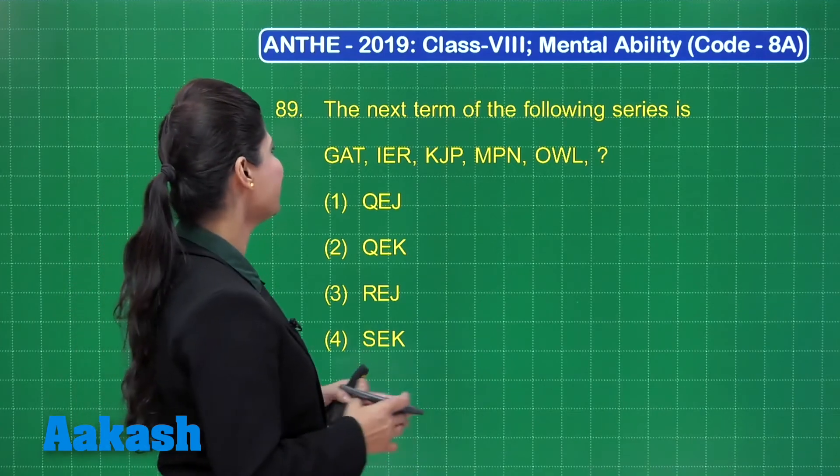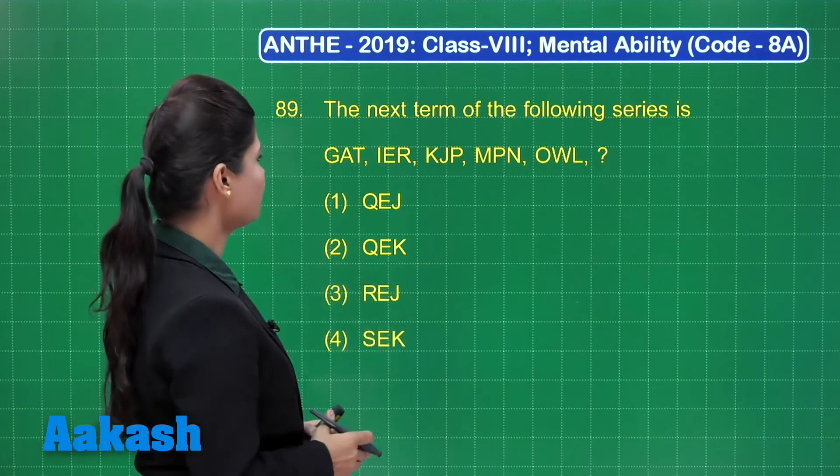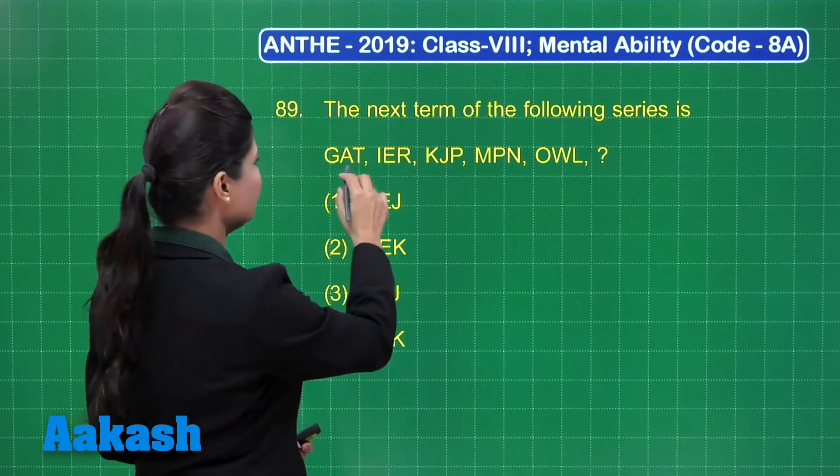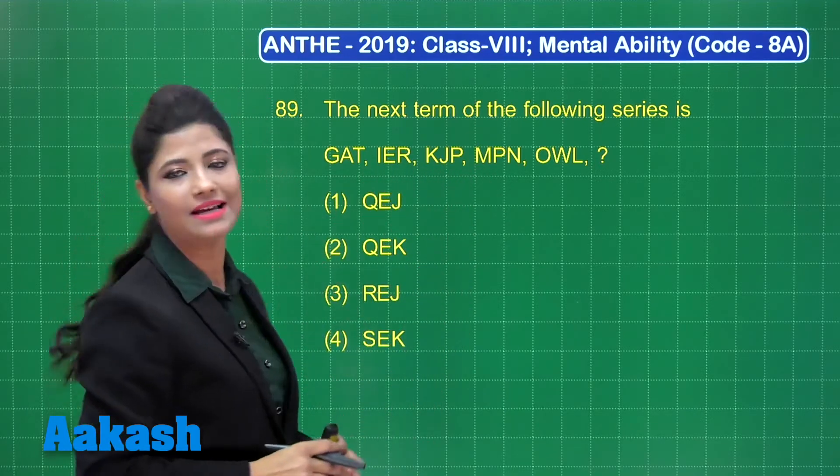Here in this question, it is stated that the next term of the following series is. In this series, we have these five sets of letters: GAT, IER, KJP, MPN, OWL. You need to find the next term here.